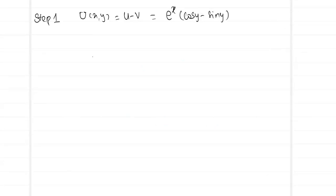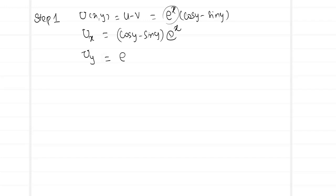So U_x = e^x(cos y - sin y) and U_y = e^x(-sin y - cos y). Step 1, finding the derivatives, is complete.